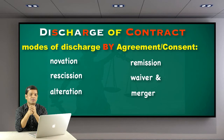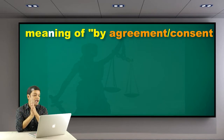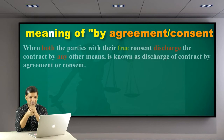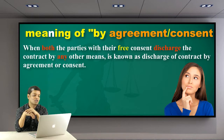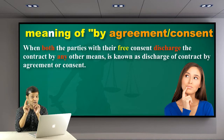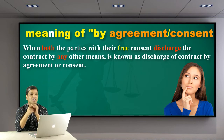Let's check the technical meaning of discharge of contract by agreement or consent. When both the parties with their free consent discharge the contract by any other means — that is, other than performance, which we have already discussed — it is known as discharge of contract by agreement or consent.